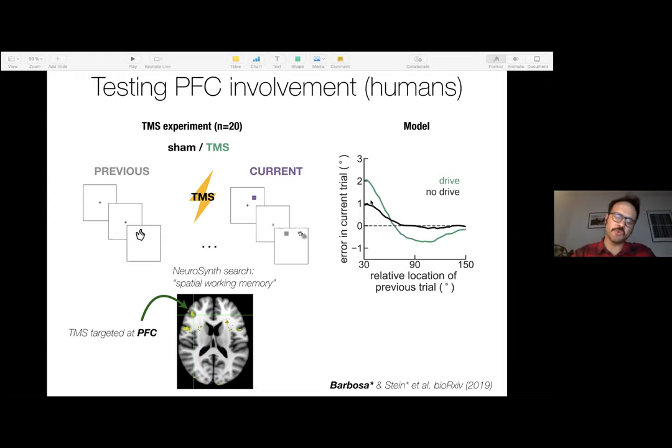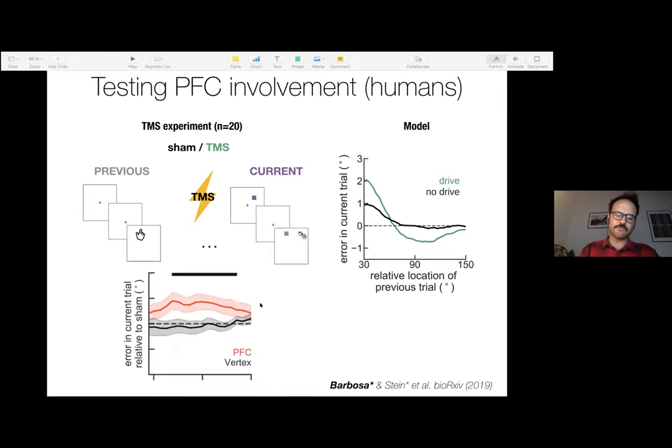And the prediction is again, that if you have reactivations, you should have more stronger serial bias. And this is in fact what we found. So if I plot the distance between these two curves, you see that for PFC, there is indeed an increase of the serial bias. While for vertex, these two curves are not different. Again, a lot of details I'm keeping here for the sake of time, happy to go back to it. Otherwise please refer to our paper.